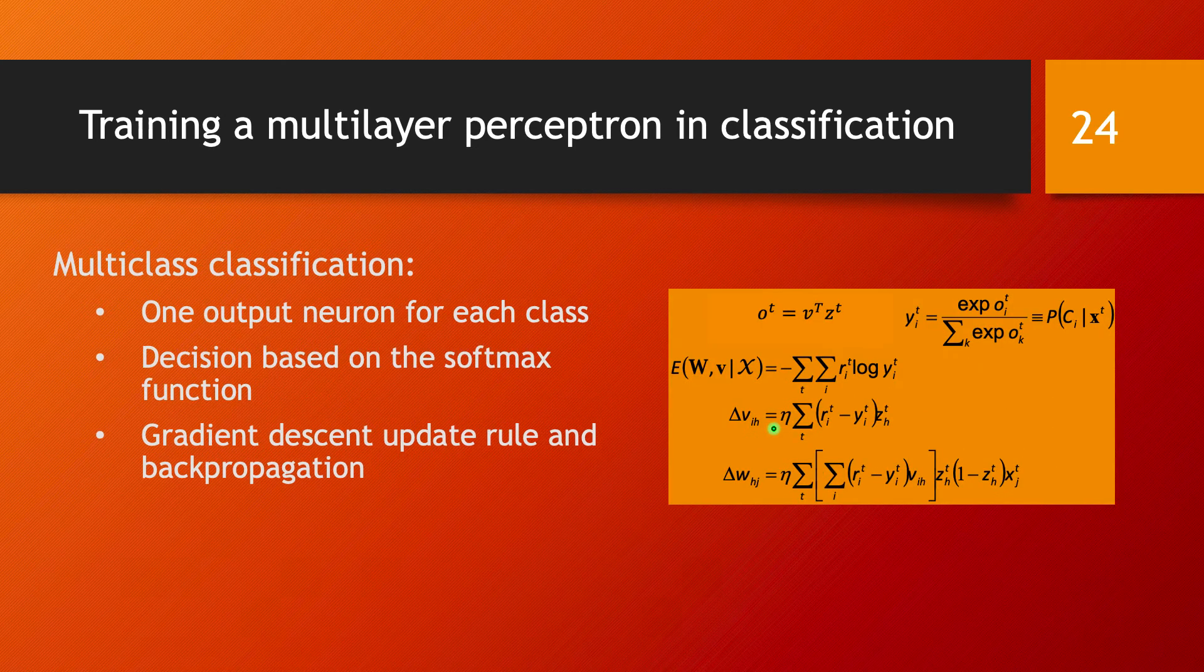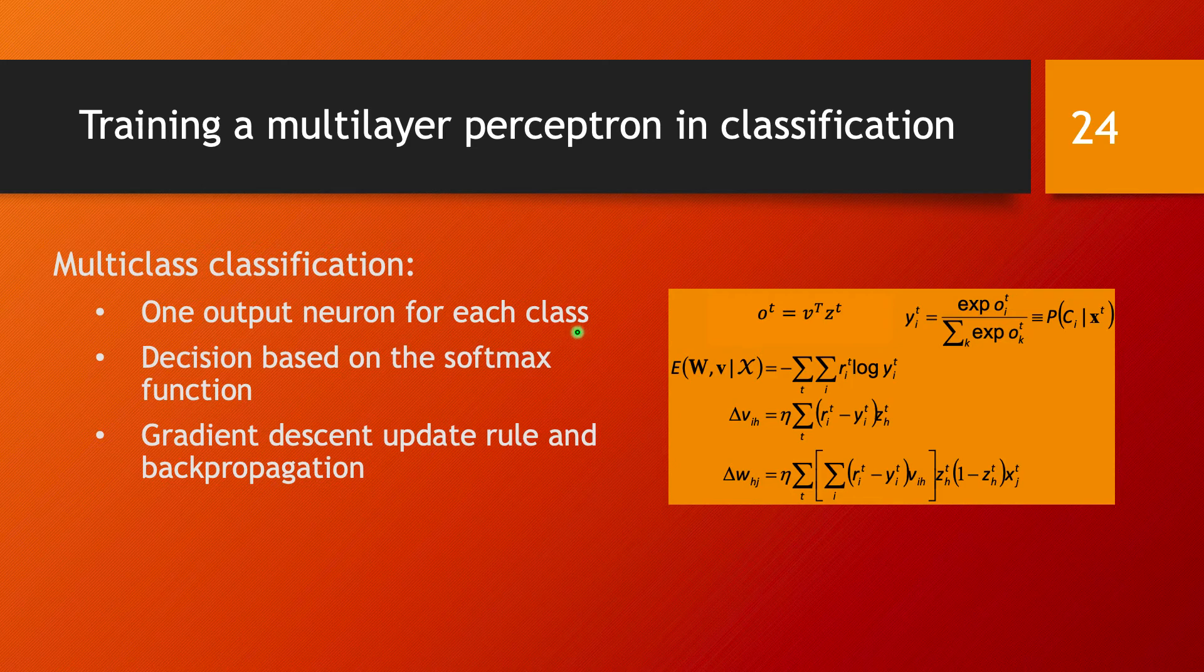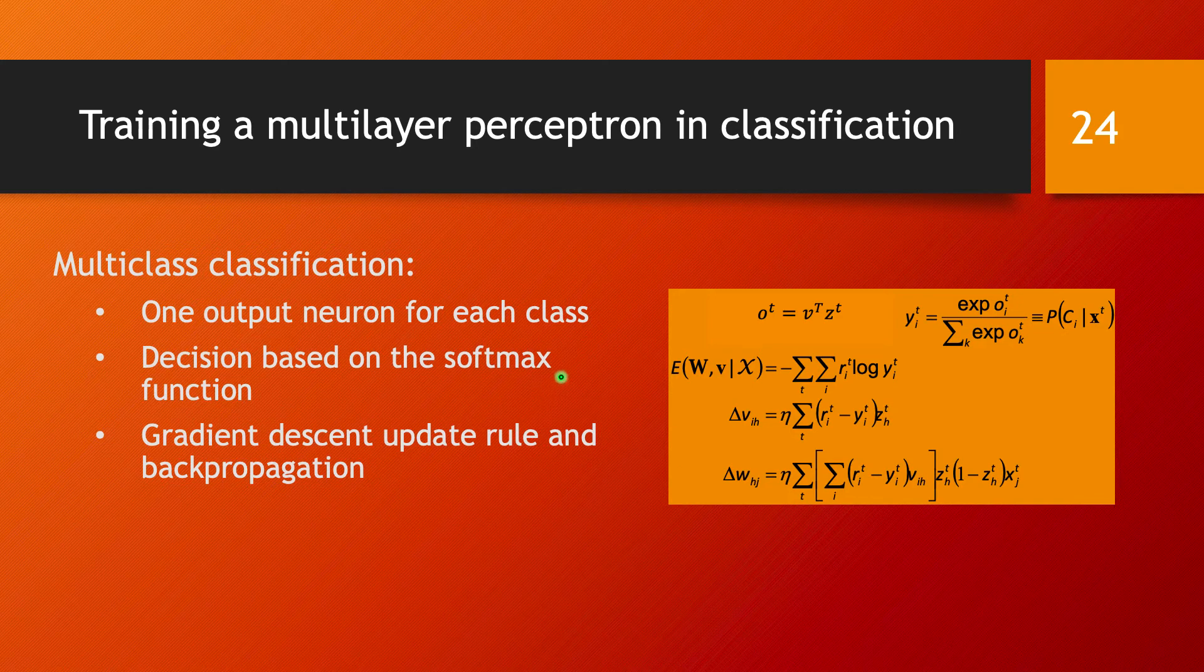For multiclass classification problems, we will have one output neuron for each class, and the decision between those K classes is going to be based on the softmax function.